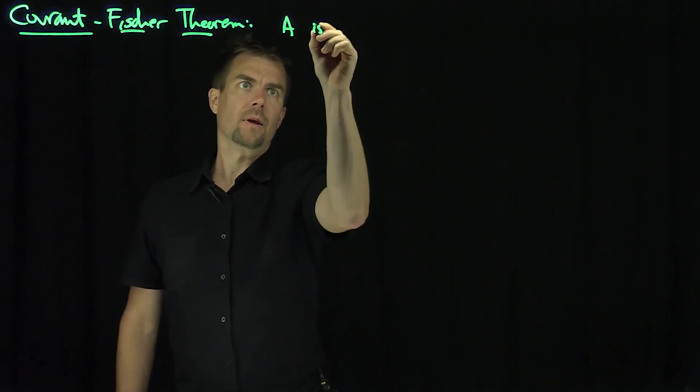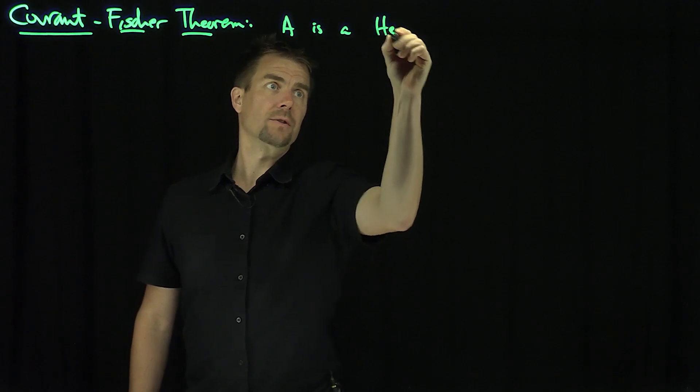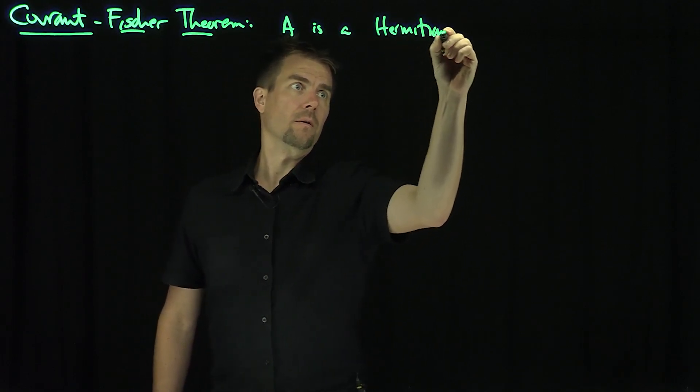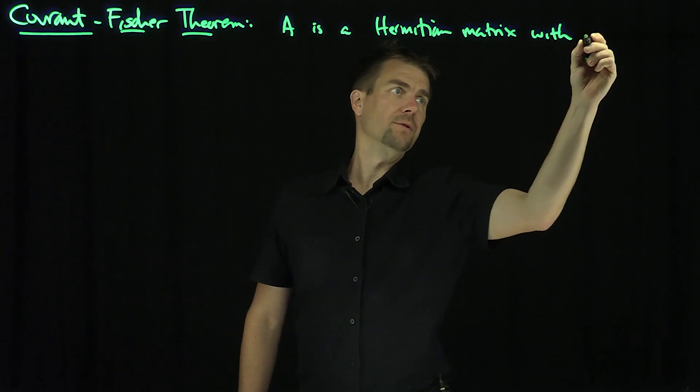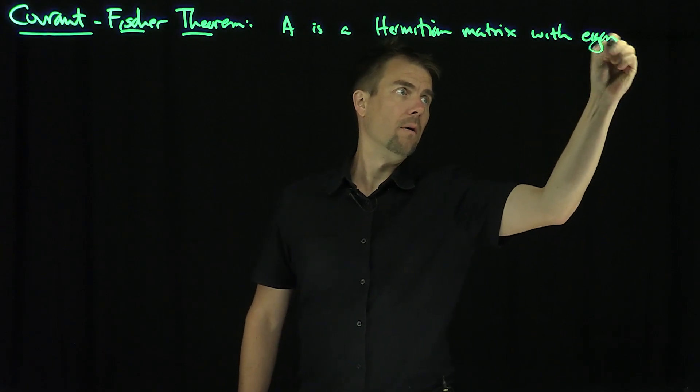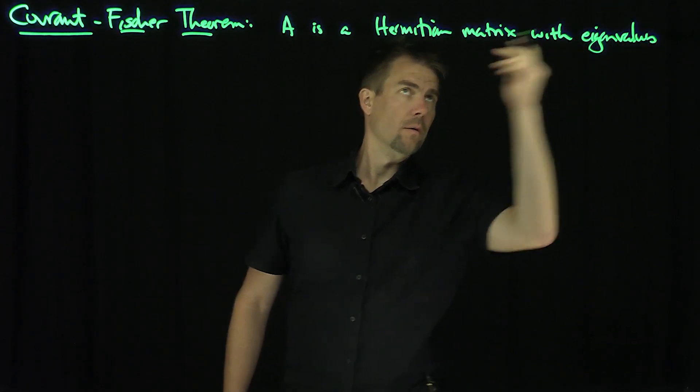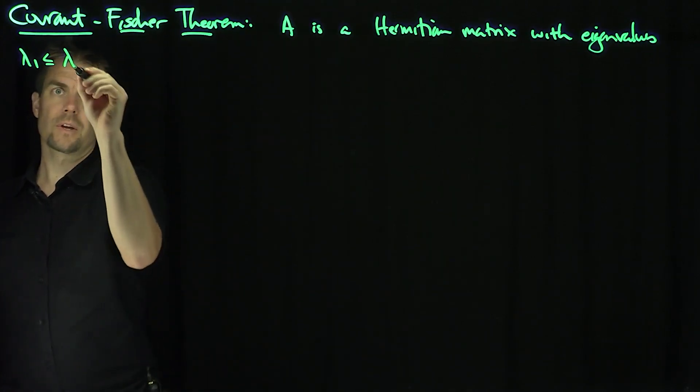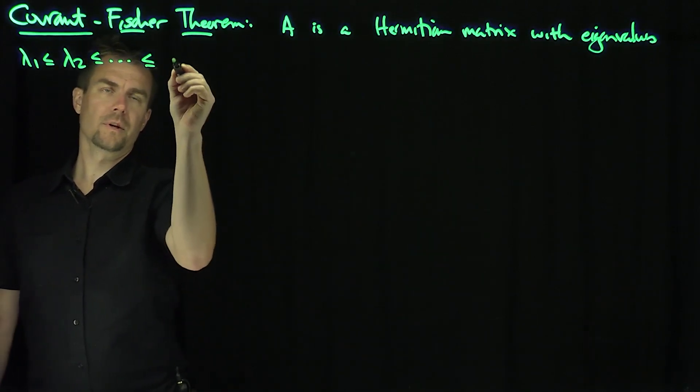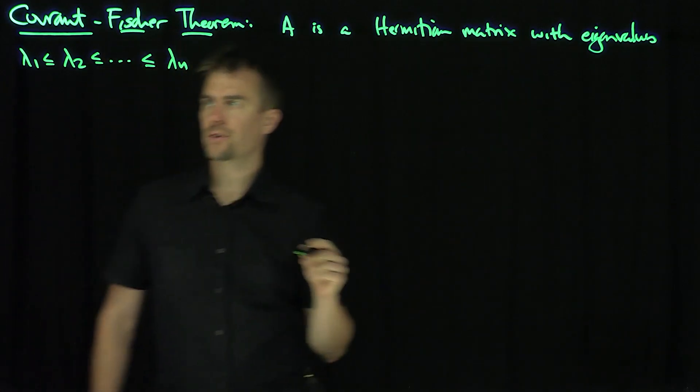It says if A is a Hermitian matrix with eigenvalues λ₁ ≤ λ₂ ≤ λₙ, arranged in this fashion,